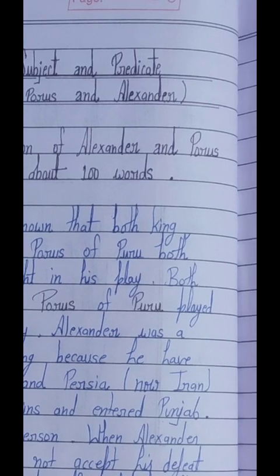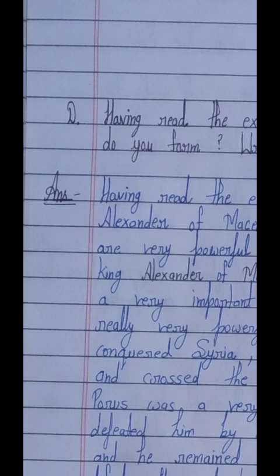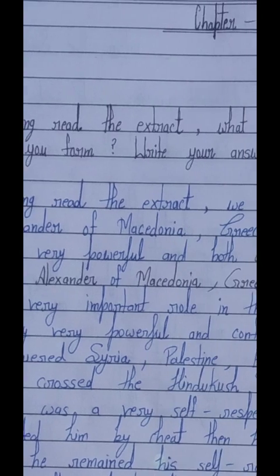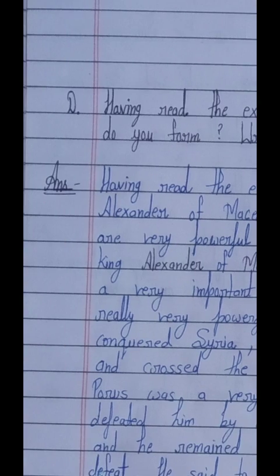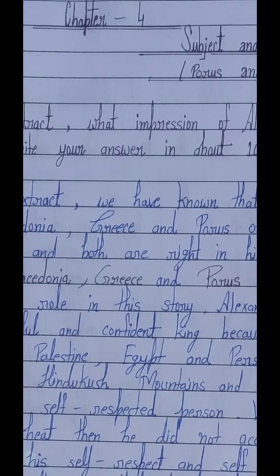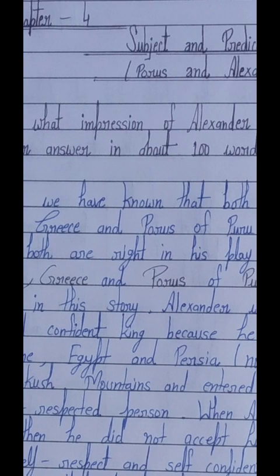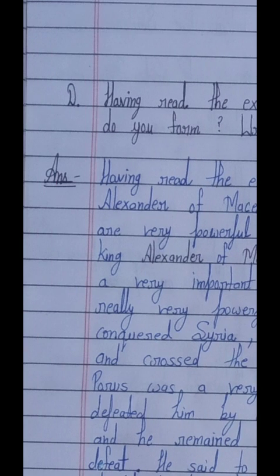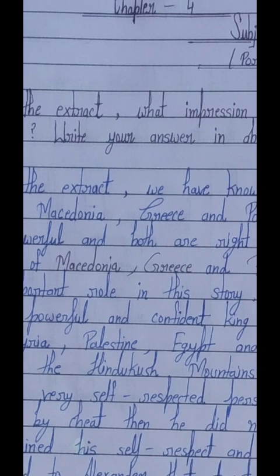Exercise D asks: 'Having read the extract, what impression of Alexander and Porus do you form? Write your answer in about 100 words.' 'Extract' means a passage or selected portion of text — 'taradhiya saar' in Urdu. So 'having read the extract' means 'is taradhiya saar ko par kar,' and 'what impression of Alexander and Porus do you form' means 'Sikandar aur Porish ka kya prabhav aap par parta hai.'